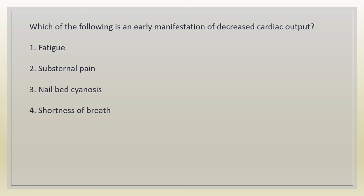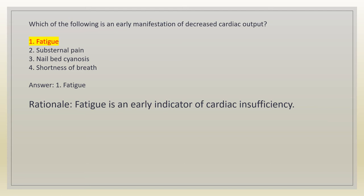Which of the following is an early manifestation of decreased cardiac output? 1. Fatigue. 2. Substernal pain. 3. Nailbed cyanosis. 4. Shortness of breath. Answer: 1. Fatigue. Rationale: fatigue is an early indicator of cardiac insufficiency.